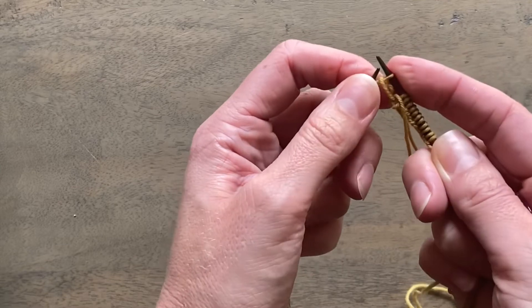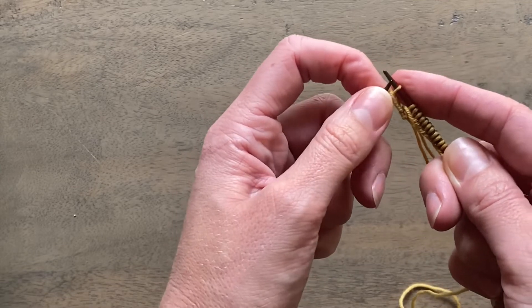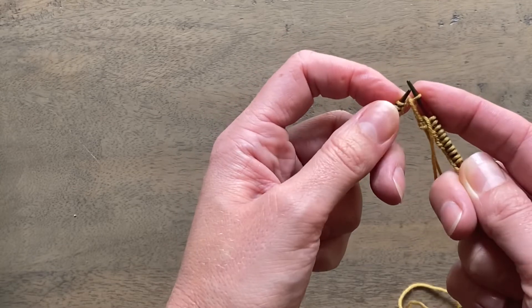So you've now decreased that extra stitch and you're using it to make a really neat join in the round.